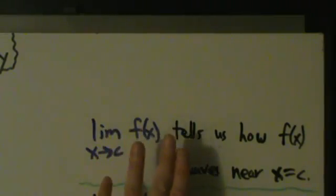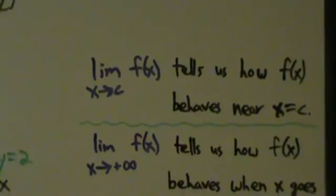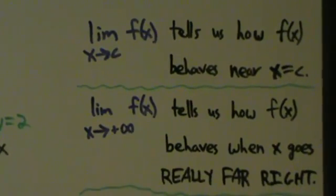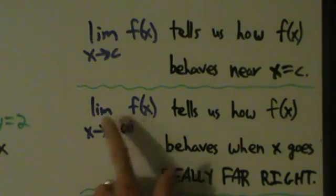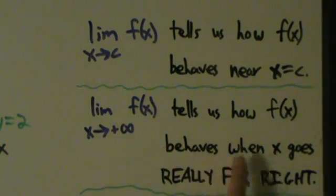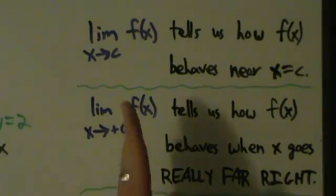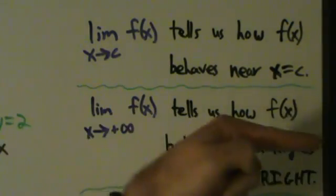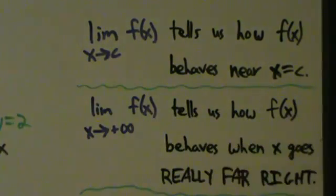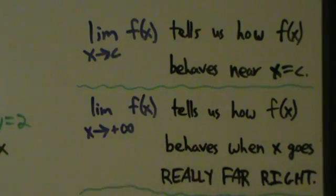So when x is really close to c, this limit tells us how f of x is going to behave and what it looks like it's going to do. Similarly, we can take limits at infinity. If we say the limit as x approaches positive infinity of f of x, that tells us how f of x behaves when x goes really far to the right — if we take x and send it off toward positive infinity, this limit tells us how the function is going to behave.